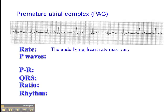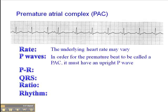The heart rate of the underlying rhythm may vary — it may be normal, slow, or fast; it just depends. In order for the premature beat to be called a premature atrial complex, it has to have an upright P-wave. Here is a sinus beat, here is another sinus beat, here is another one, and here is the premature atrial complex.